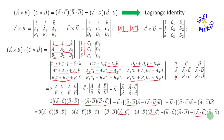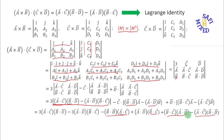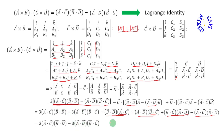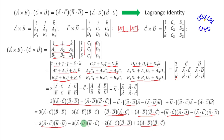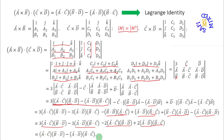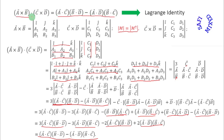Now looking carefully, the term a dot c times b dot d combines with another a dot c times b dot d to make 2(a dot c)(b dot d). Similarly the term a dot d times b dot c combines with its counterpart to make 2(a dot d)(b dot c). Rewriting and subtracting appropriately, the final result simplifies to (a dot c)(b dot d) minus (a dot d)(b dot c), which is exactly the Lagrange identity. This completes the proof.